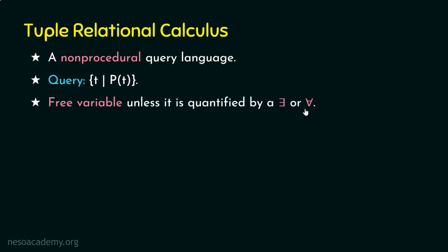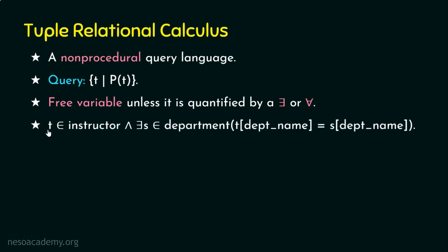An existential quantifier means 'there exists an x such that,' and a universal quantifier means 'for every x' or 'for all x.' For example, t is a tuple variable belonging to the instructor relation, and if there exists another tuple variable s belonging to the department relation such that the department name on t and s is the same — that is an example query in tuple relational calculus. Here t is a free variable because it is not bound by any quantifier, whereas s is a bound variable because it is quantified by the existential quantifier.